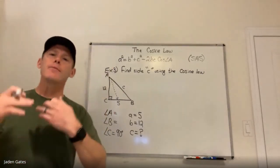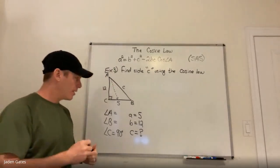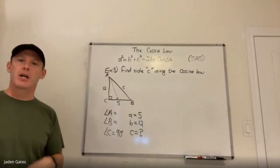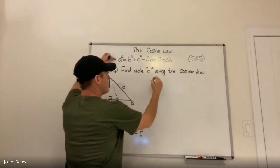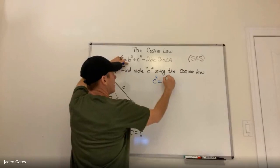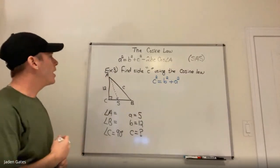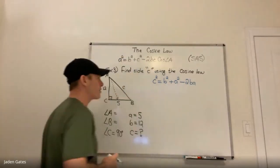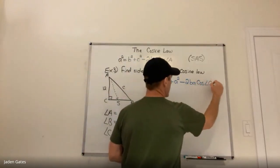With our formula, I'm trying to find side C. I'm going to rearrange the formula by switching A's and C's so I don't have to move things at the end. So instead of a squared, I have c squared. B's I'm not touching — still b squared. Plus c squared becomes plus a squared. Then minus 2bc becomes minus 2ba, and cosine of angle A becomes cosine of angle C.